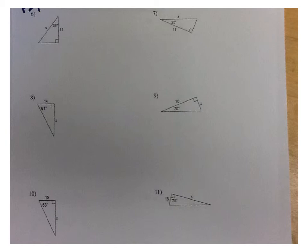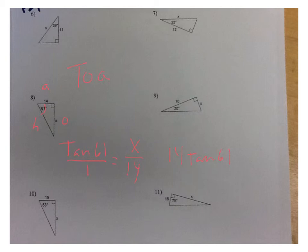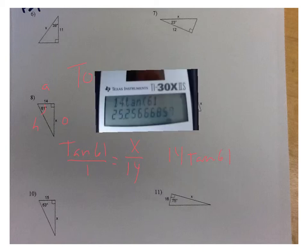Here I can see the angle, the opposite side, the adjacent side, and the hypotenuse. Since I know the adjacent and want the opposite, this is a tangent problem — the TOA part. I write the tangent of 61 over 1 equals X over 14. The cross-product is 14 times the tan of 61. Type that into your calculator, and the calculator tells me that missing side is 25.3 long.